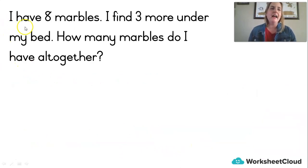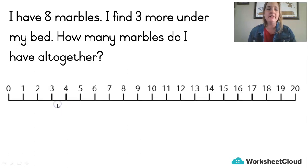Okay. Last one. I have eight marbles. I find three more under my bed. They're always doing that because they roll around. How many marbles do I have all together? Okay. Let's use our number line. Eight marbles. Adding three more. How many do I have all together? Okay. Let's do it.